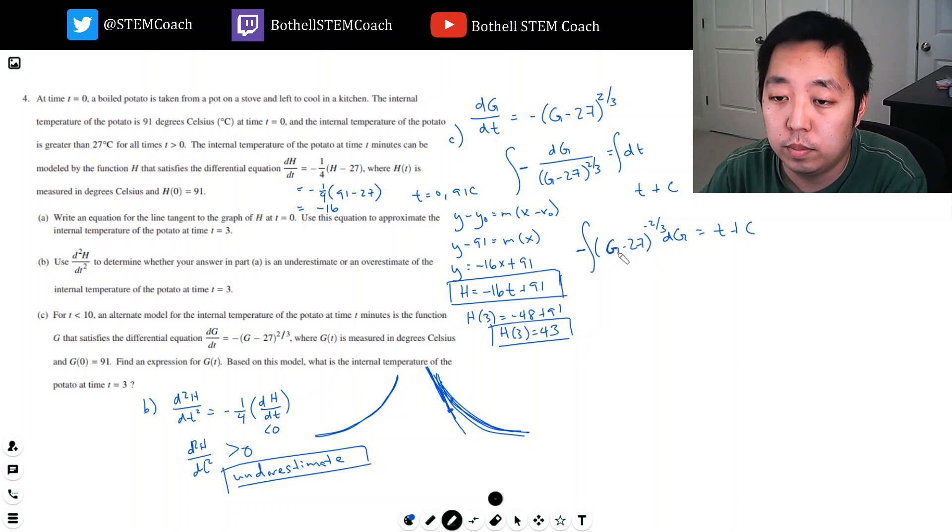I can integrate both sides. The right side is just negative t plus c. The integral of this is negative—let's write this as (g minus 27)^(-2/3). I need to do a u-sub, but this u-sub is trivial, so you can just do power rule directly. I add one to the exponent, that makes it one-third. I divide by one-third and still have this negative sign.